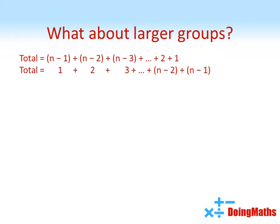So if we add these two together, we'll get two times the total on the left and we'll get a whole load of n's added together on the right. Now our list goes from 1 to n minus 1, so obviously there are n minus 1 numbers there, which means we've got n minus 1 lots of n. So so far we've got 2 times the total equals n times n minus 1.